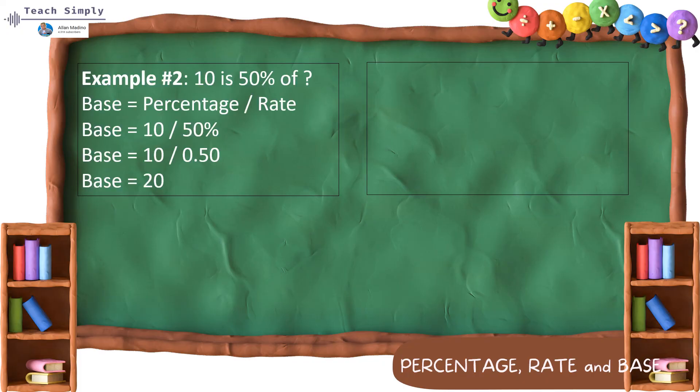For another example, example number 2, 10 is 50% of what? So, base is equals to percentage divided by the rate. So, base is 10 divided by 50%. Let's convert it to become decimal by moving two decimal places to the left. So, 50% magiging 0.50. So, 10 divided by 0.50 is equals to 20.